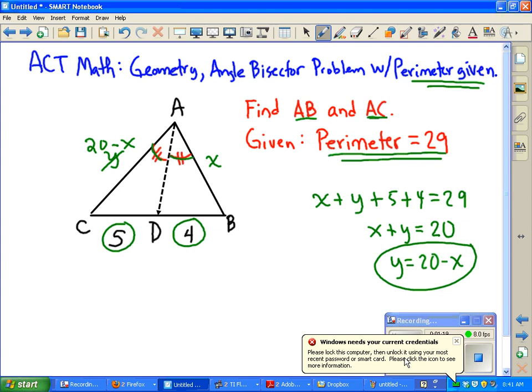Now what we have is a proportion. Using the angle bisector theorem, we know that this side, 20 minus X, is proportional to 5. So 20 minus X is to 5 as X is to 4.